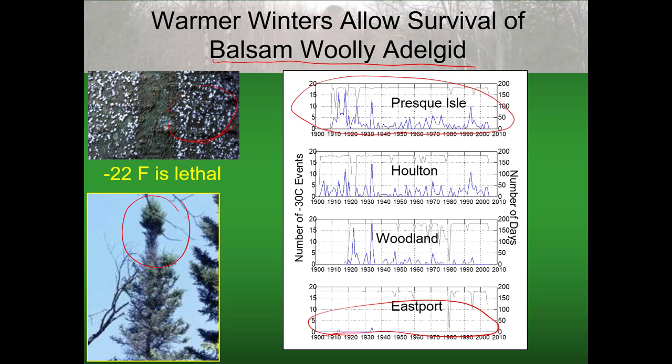What's changed is when we go just a bit inland — such as Woodland or Orono, about the same situation. Prior to 1940, there were quite a few events during the winter where it got down to this lethal temperature. However, since 1940, the number of times with lethal temperatures has gone down quite a bit, and the result is we've seen the adelgid intensify more inland. In the early 2000s it actually resulted in some balsam fir mortality well up towards the airline, well away from the coast. So warmer temperatures are making the balsam woolly adelgid more lethal.